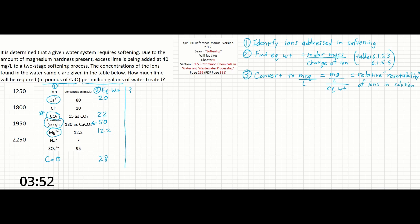So 80 mg per liter divided by the equivalent weight of 20 is going to give us 4 milliequivalents per liter.